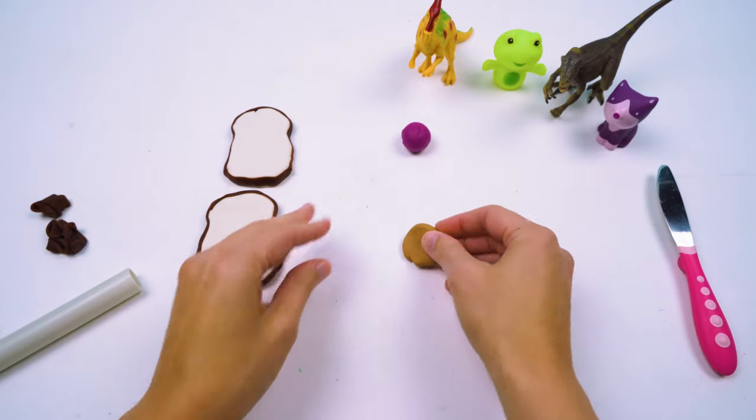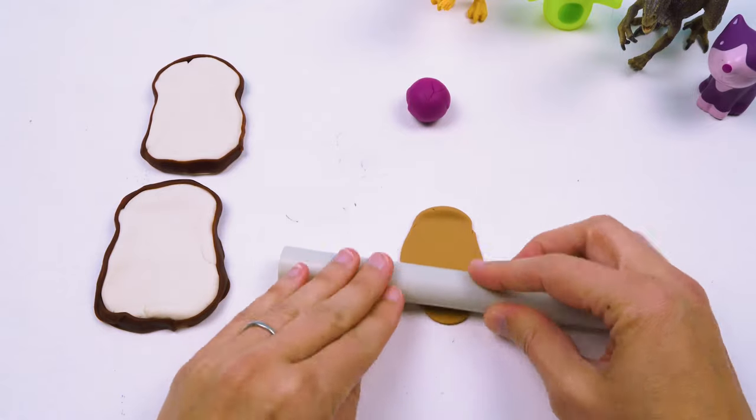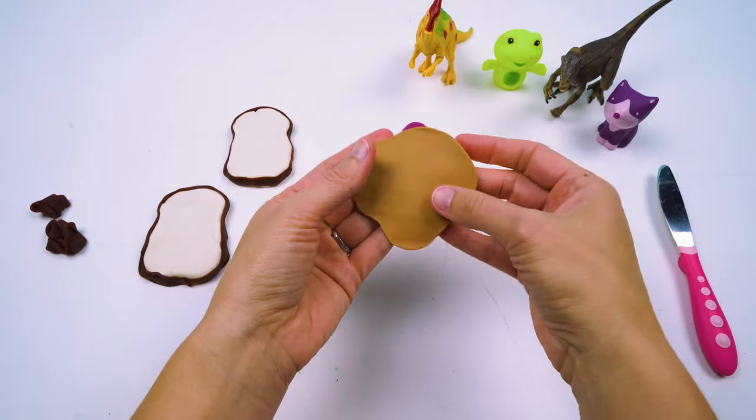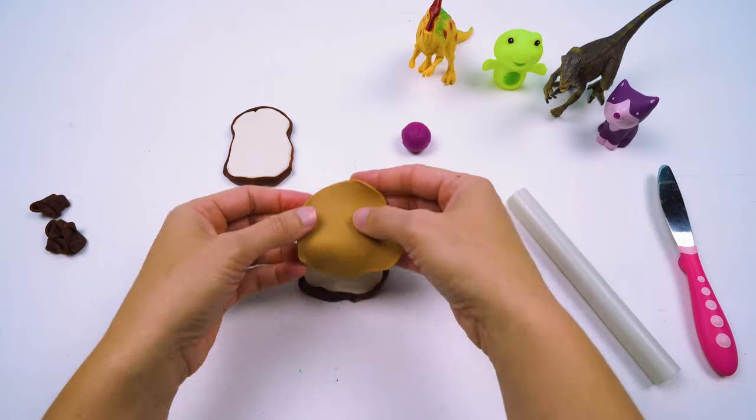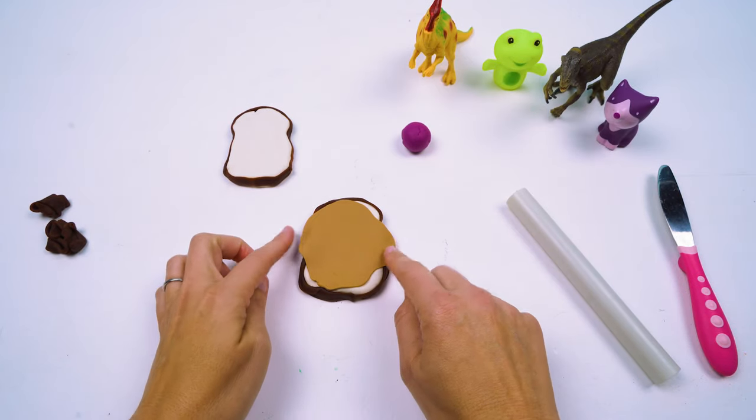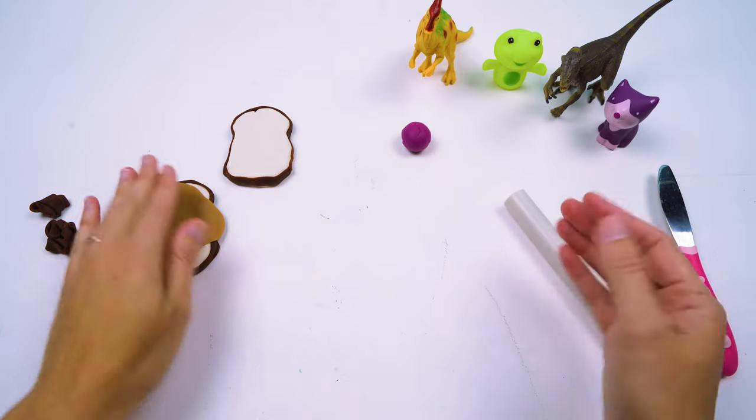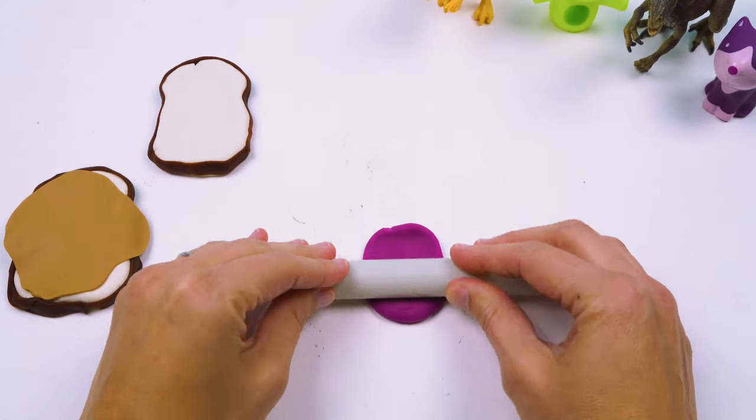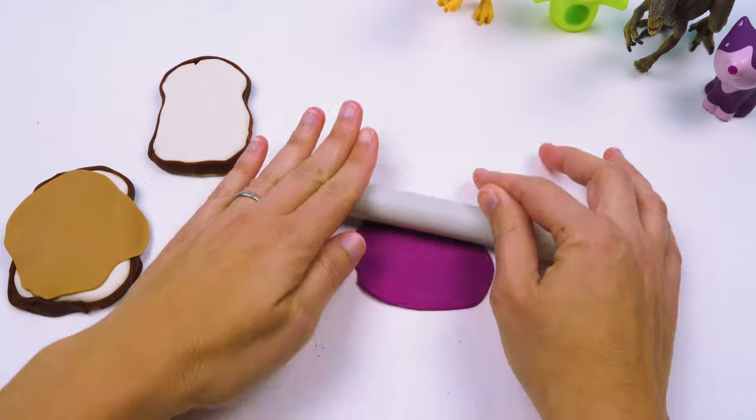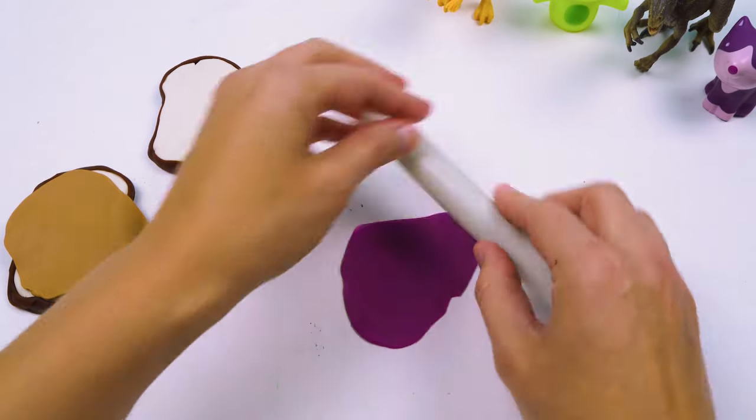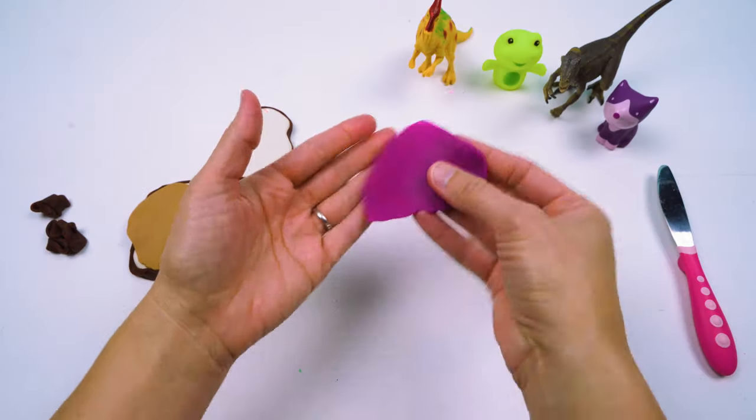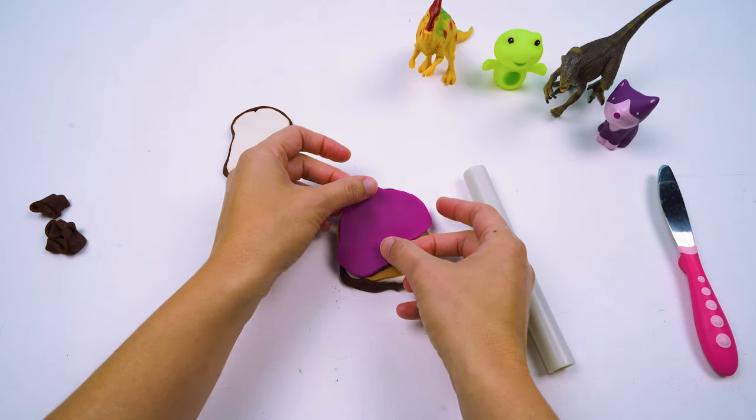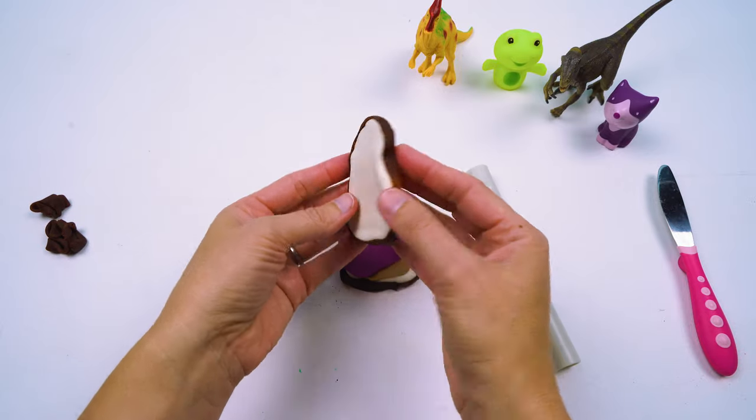So let's put our peanut butter on first. Mmm, that looks delicious. Oh look, it's going to come out the side. Well that's OK. Now let's make some grape jelly. Oh, that looks tasty. So let's put it right on top of our peanut butter and add our second slice of bread.